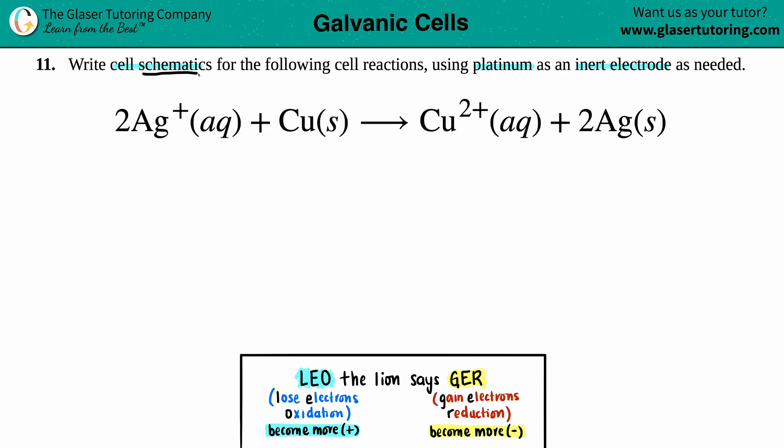A schematic is basically just a different representation of this balanced equation. It talks about the balanced equation just in a different way, so it's like a drawing in chemistry terms. These cell schematics come from oxidation and reduction, so we will go back to LEO the lion says.